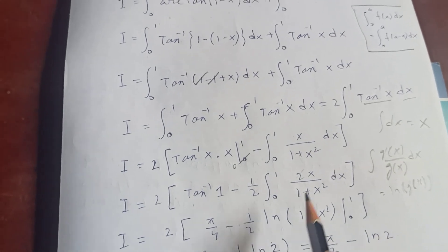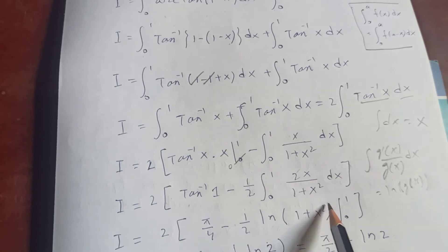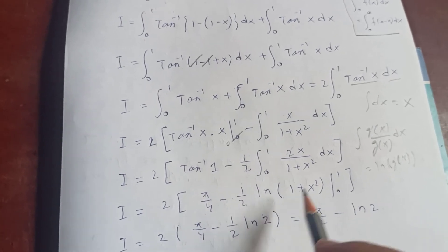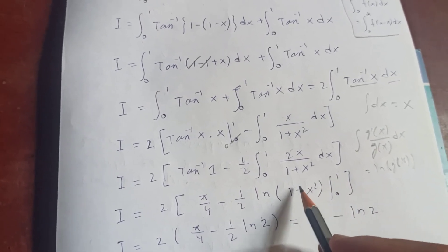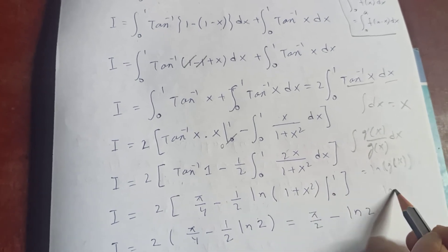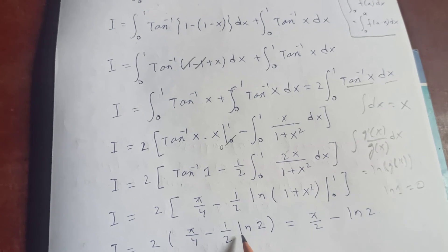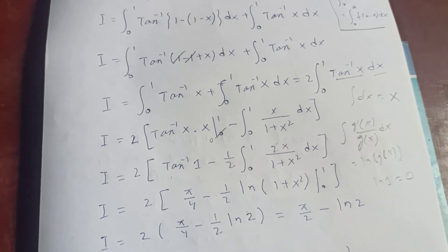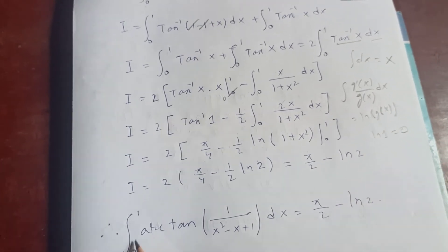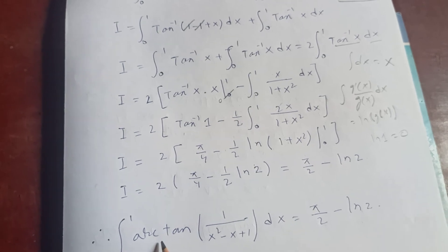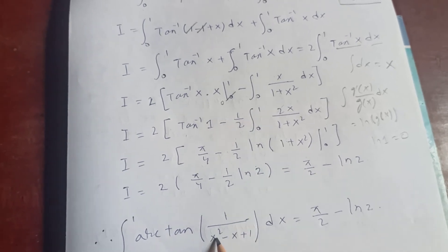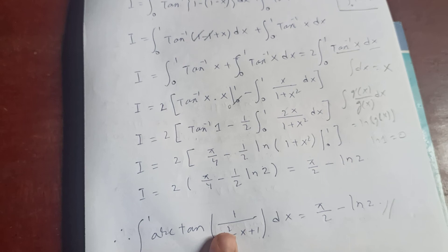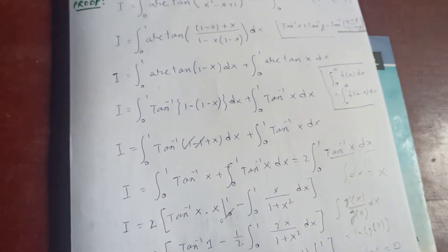That gives log(1 plus x squared) evaluated from 0 to 1. So I equals 2 times pi over 4 minus one half times [log(1 plus 1) minus log(1)], which is 2 times pi over 4 minus one half times log 2. Bringing the 2 inside: I equals pi over 2 minus log 2. Therefore our integral, the integral from 0 to 1 of arctan of 1 over (x squared minus x plus 1) dx, equals pi over 2 minus log 2. That's how we derive this result.